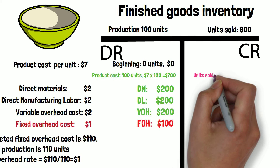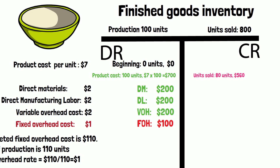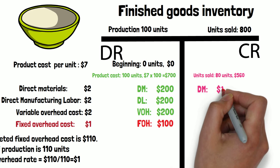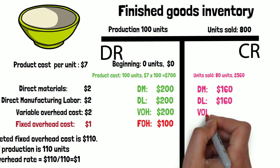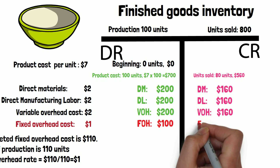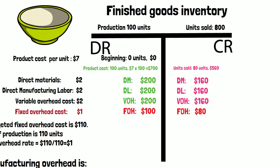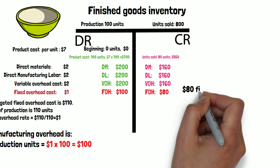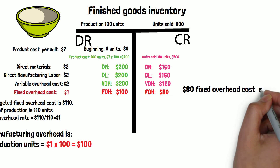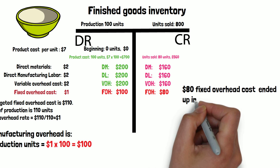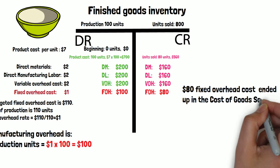Let's assume that the units sold is 80 units. The cost will be $560. This includes direct materials $180, direct labor $160, variable overhead $160, and fixed overhead $80. So $80 fixed overhead cost ended up in the cost of goods sold.